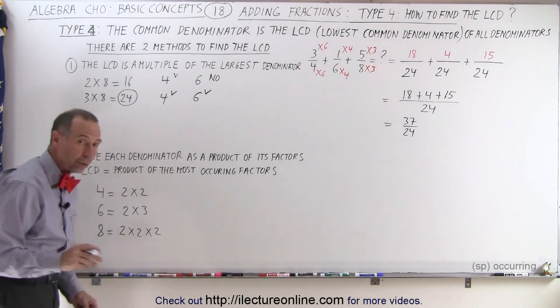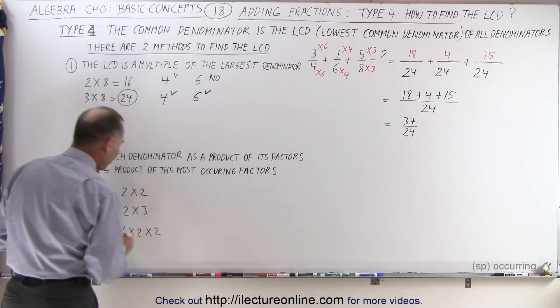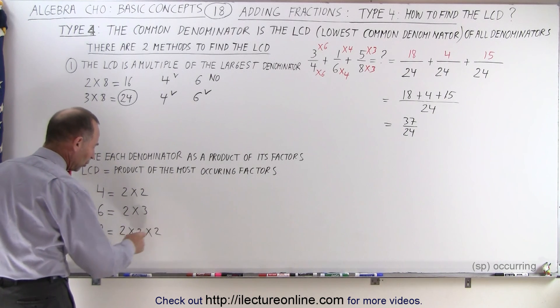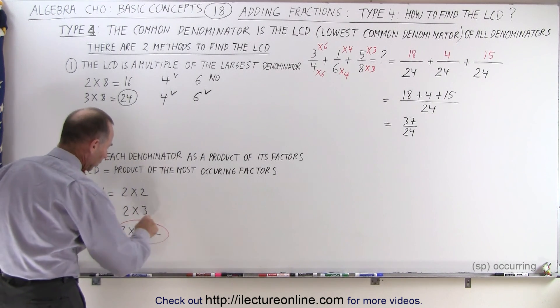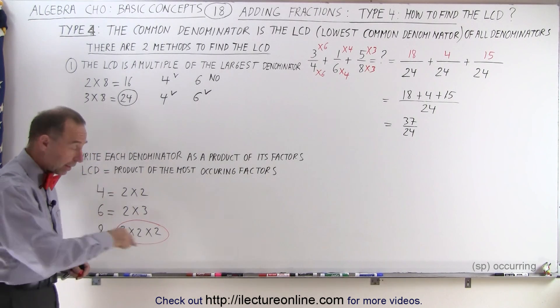So you can see here the factor 2 occurs 3 times. So now we circle each factor where it occurs the most. So the factor 2 occurs 3 times here. It occurs once here and twice there, but it occurs 3 times there. So that's the one where we circled. The factor 3 only occurs once. It occurs right here, nowhere else.